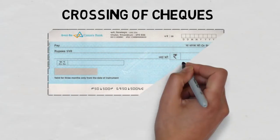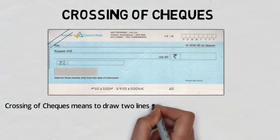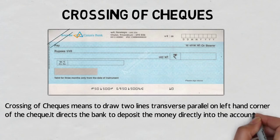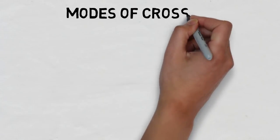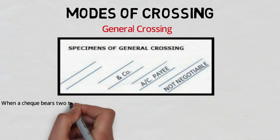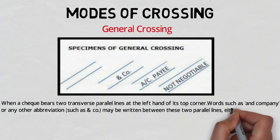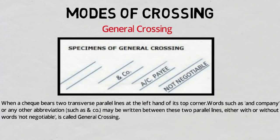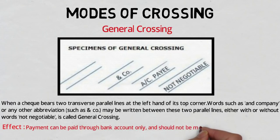Now we come to crossing of the check, which means drawing two transverse parallel lines on the left corner of the check. It directs the bank to deposit money strictly into the account of the payee and not to pay cash at the counter. General crossing is when a check bears two transverse parallel lines at the top left corner, with words such as 'and company' or any abbreviation, written between the two parallel lines, either with or without the words 'not negotiable.' In general crossing, payment can be made through a bank account only and should not be made at the counter.